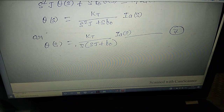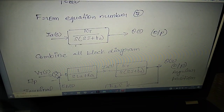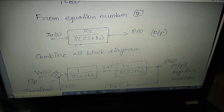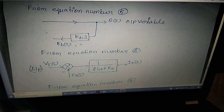Combining the blocks: input VT goes to the summing point, minus EB(S) gives the error, multiplied by 1/(S·LA + RA) gives armature current IA(S) — equation 6. That IA(S) is multiplied by KT/(S·(S·J + F0)) — equation 7 — to give theta(S). Feedback is taken from theta(S) multiplied by KB·S to get EB(S) — equation 5. This completes the block diagram.